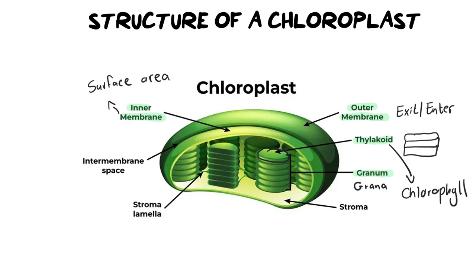The thylakoids are not sitting in an empty space — they're actually in a gel-like, liquid substance called the stroma. Please be very careful with the spelling: there is something called a stoma, which is part of the stomata. Make sure you put that letter R in when spelling stroma, because very often we accidentally leave it out and end up spelling stoma, which is very problematic.